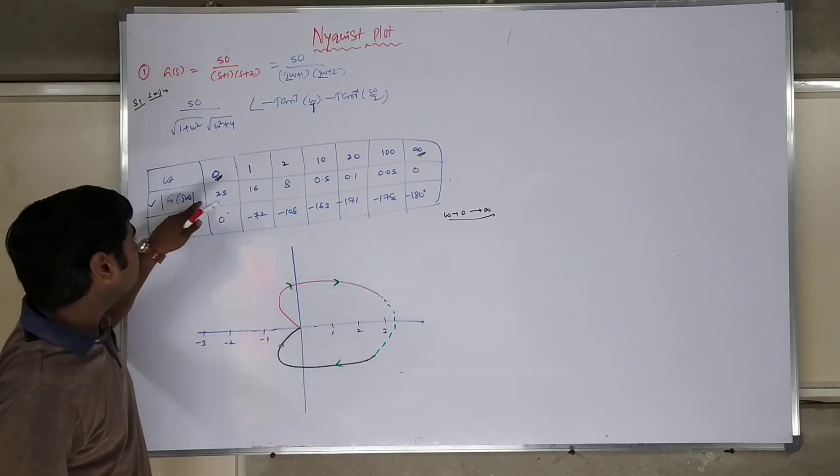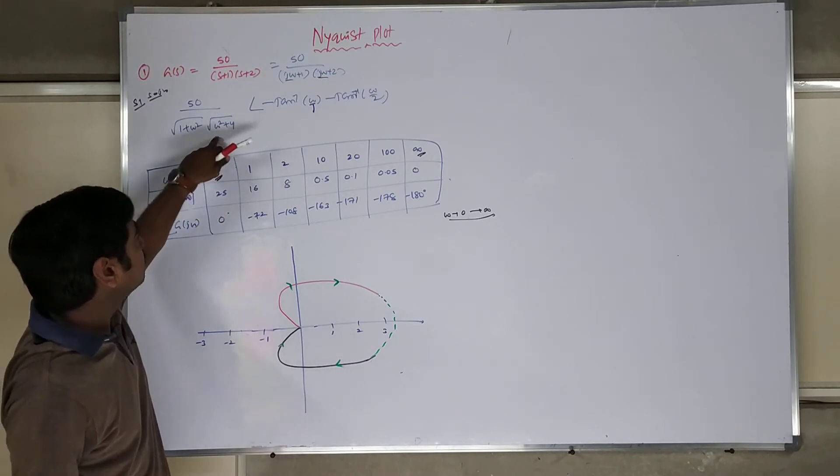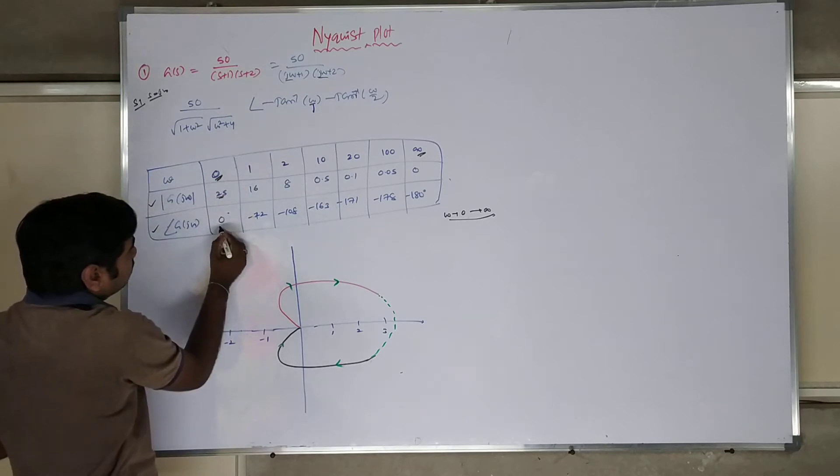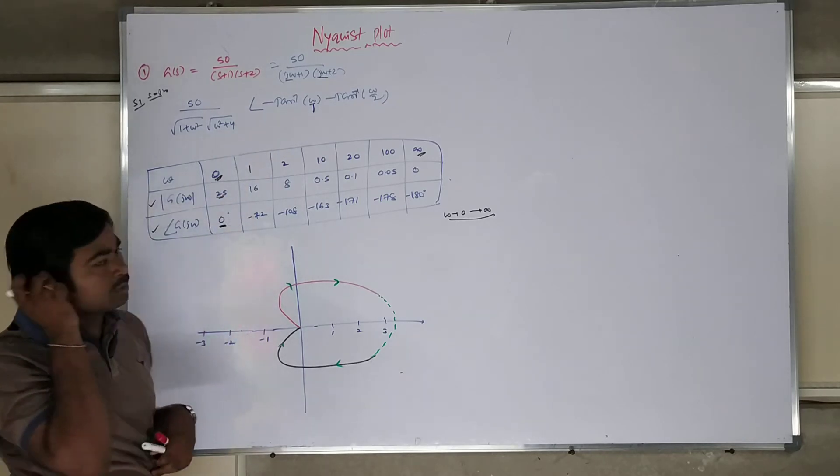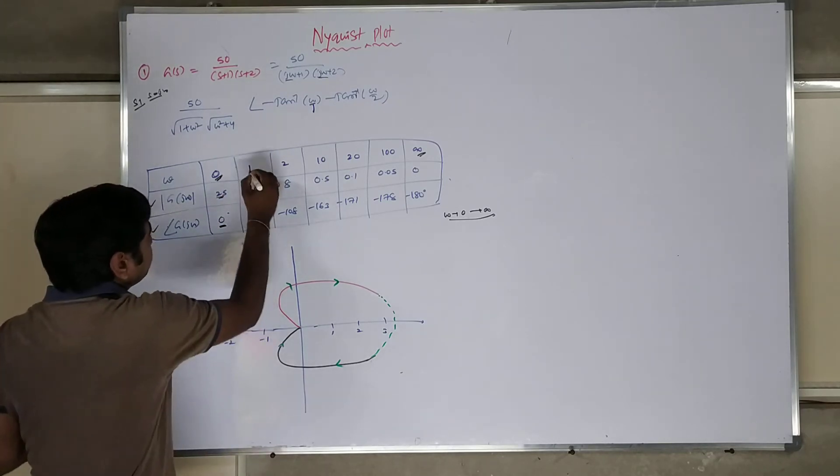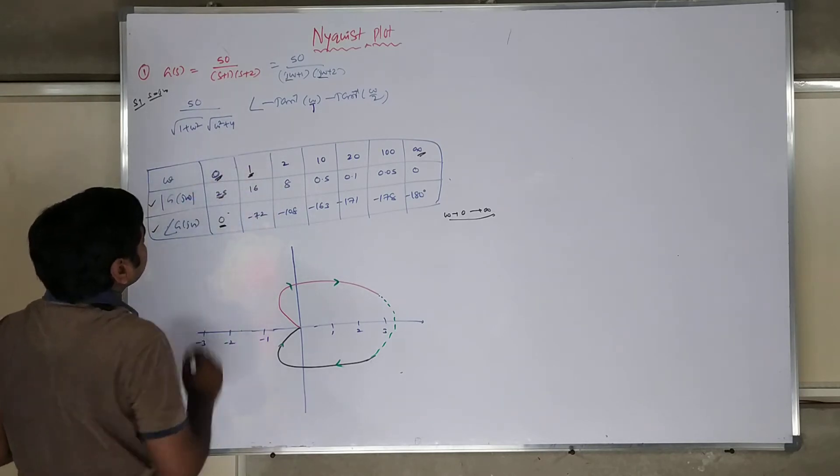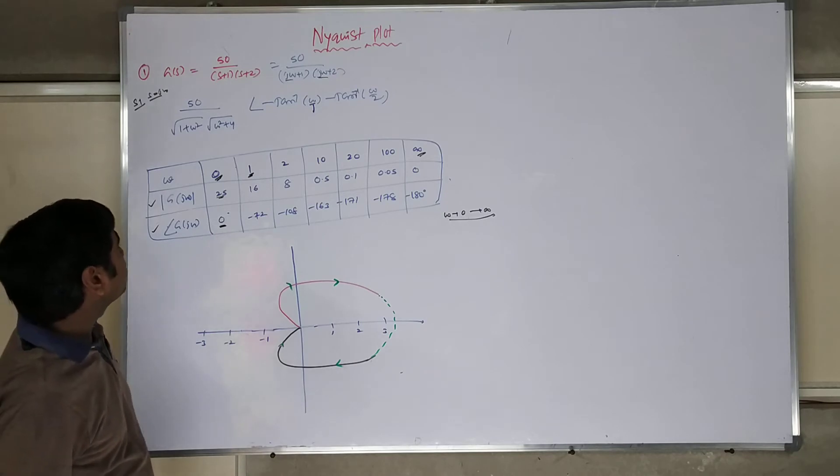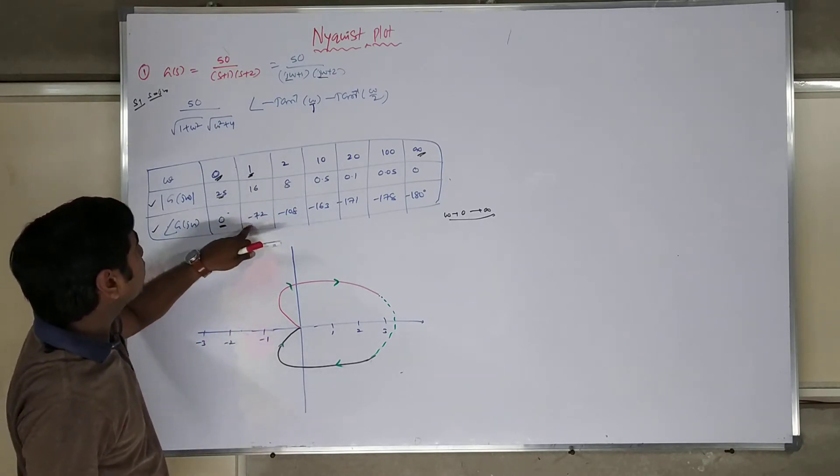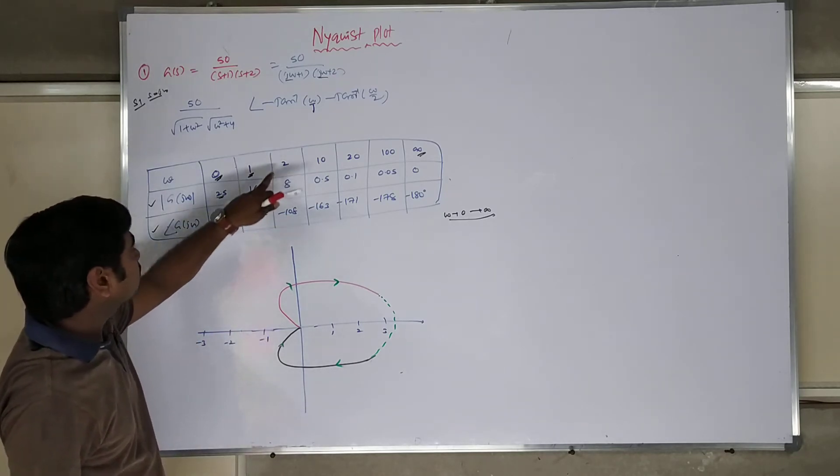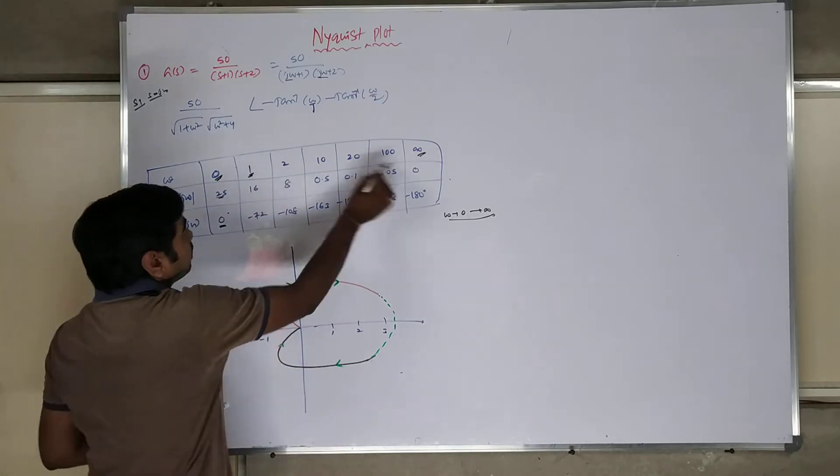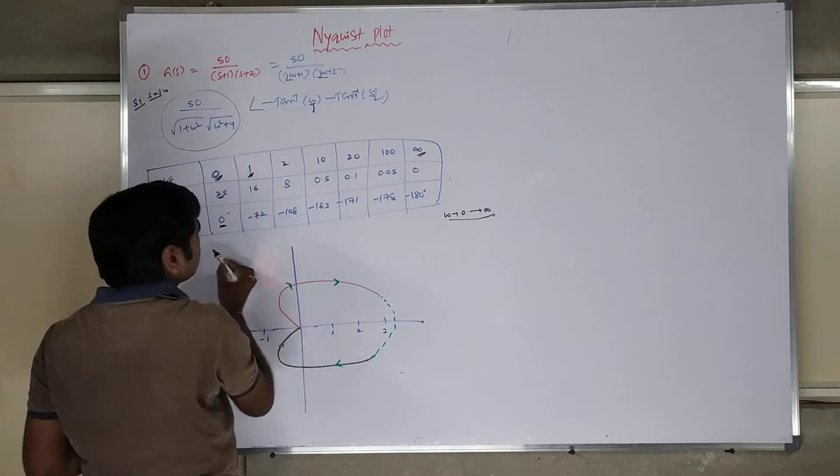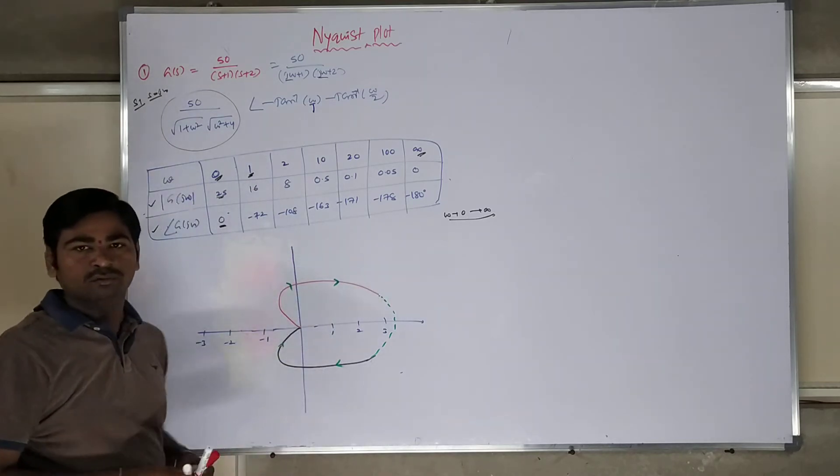Corresponding that, I am calculating using a calculator. When you keep 0, magnitude will be 25. When you keep 0, angle will be 0. Because tan inverse 0, tan inverse 0, minus 0 minus 0 is 0. Then you keep omega equals 1, so 50 by 1 into root 4, you are writing 16. Then after, corresponding angle you are writing. Then after that, it goes up to omega equals 2. Like that, all levels of omega corresponding magnitudes. Here, corresponding phase angles. So magnitude phase angle table is over.